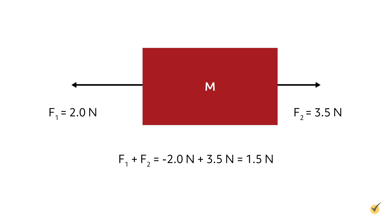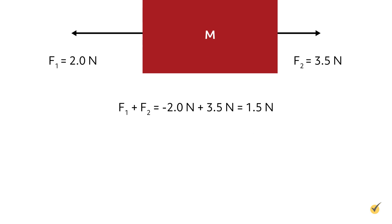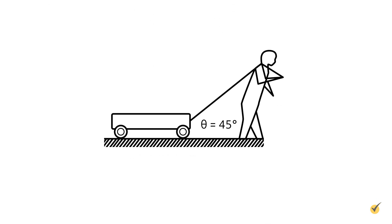Let's consider a slightly more difficult, and more realistic, problem. In this problem, a man is pulling a wagon at a 45 degree angle from the ground. We have the force of gravity acting downward with a force of 40 newtons, and a pulling force of 50 newtons. If we want to determine the net force in the direction of acceleration, we should set up the problem on an x-y coordinate system, with the mass — the wagon — at the center. We would then need to break up F2 into its x and y components.